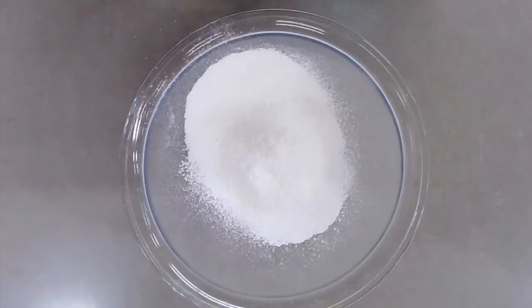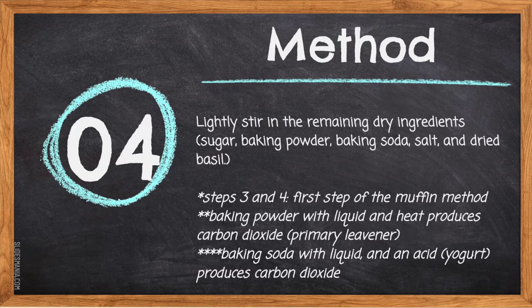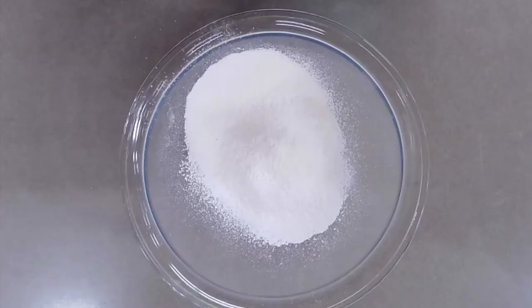Step four: lightly stir in the remaining dry ingredients — sugar, baking powder, baking soda, salt, and dried basil. Steps three and four are the first step of the muffin method. Baking powder with liquid and heat produces carbon dioxide as the primary leavener. Baking soda with liquid and acid (yogurt) produces carbon dioxide. Add all the other dry ingredients to the large bowl.